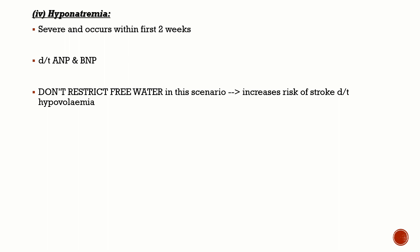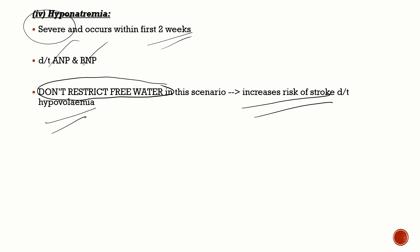Hyponatremia is very common in SAH, occurring within the first 14 days and being very profound. It is due to both atrial natriuretic peptide and brain natriuretic peptide. Importantly, free water restriction — normally the first step for hyponatremia — is contraindicated in SAH, because the patient already has vasospasm and is at risk for delayed cerebral ischemia. Free water restriction causes hypovolemia and significantly increases the risk of stroke.